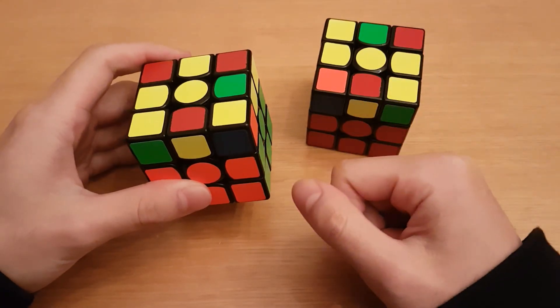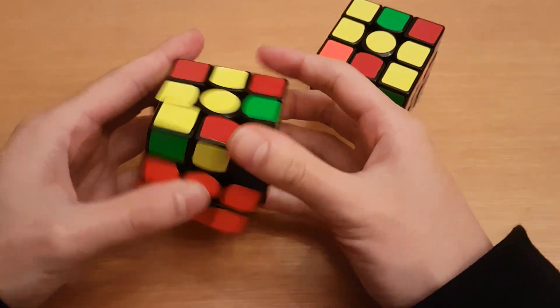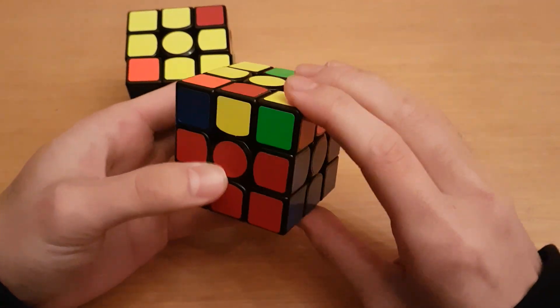So basically for the regular system you do f-sexy f-prime or f-reverse-sexy f-prime. If you get an L then you would do this, and if you get a line you would do this.